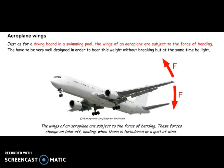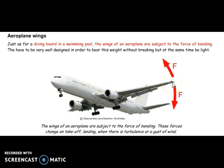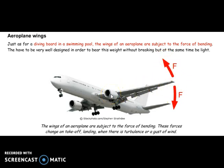This is another type of bending stress. As you can see, the wing is joined to the airplane, and the air force tries to bend the wing. So the wing is also subjected to bending stress.